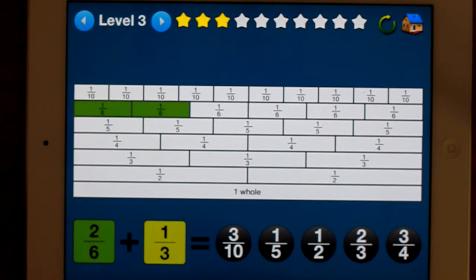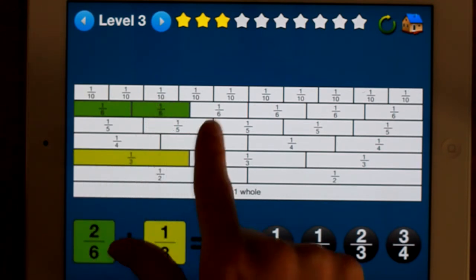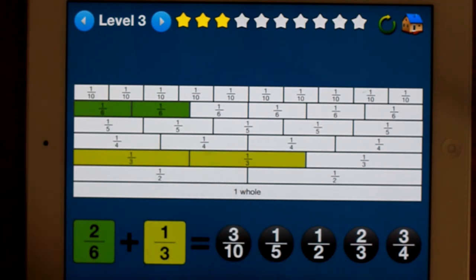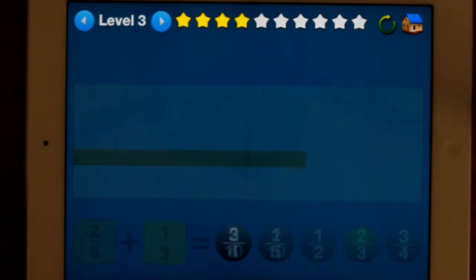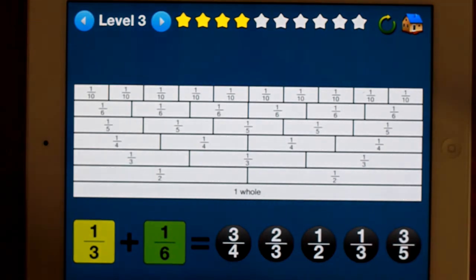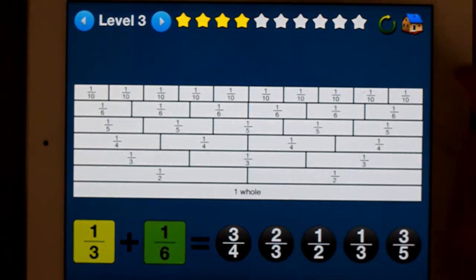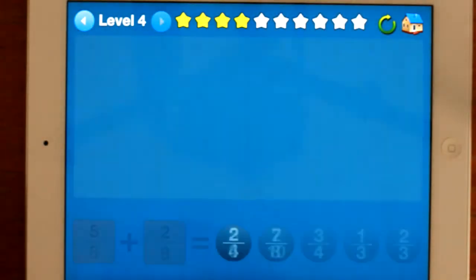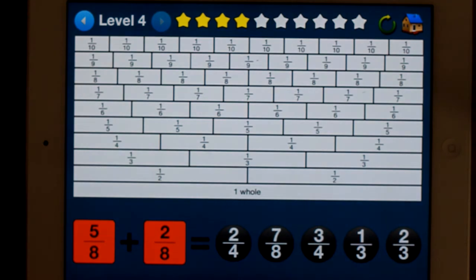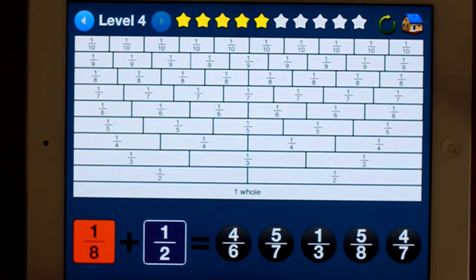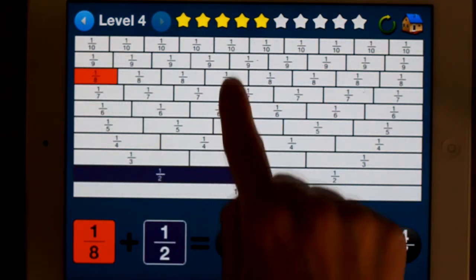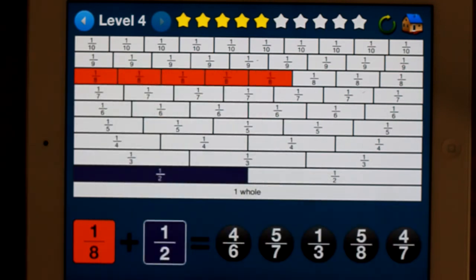So two sixths and one third. Well, one third is actually the same as two sixths. So let's put one third there. Equals two thirds. Obviously, there's ten stars when you're finished. It says the same. Do you want to play again? Or do you want to go back to the start? And level four goes up to tenths there. Five eighths plus two eighths. Well, that's an easy one, isn't it? Let's see if we can get a more tricky one. One eighth and a half. There's one eighth. Half. Well, half is actually the same as four eighths. Plus the one eighth is five eighths. So you can see it does get more challenging.